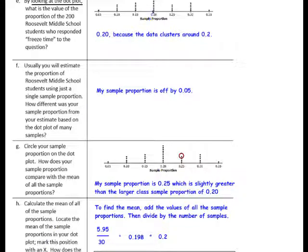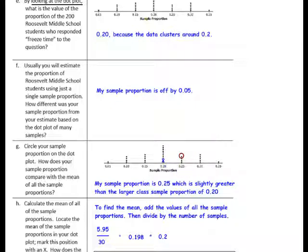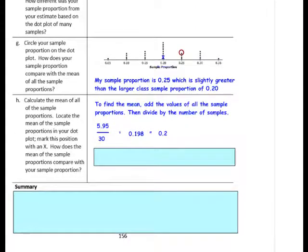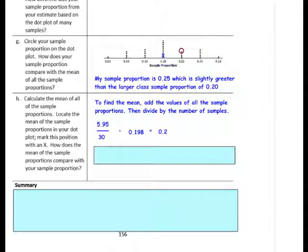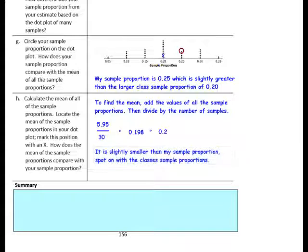When I add the data, I get 5.95, then divide by 30 samples, giving a value of 0.198, which rounds to 0.20. Place an X on the dot plot at 0.20. My sample value was at 0.25, and the mean is at 0.20. The mean of the sample proportions is slightly smaller than my individual sample proportion.